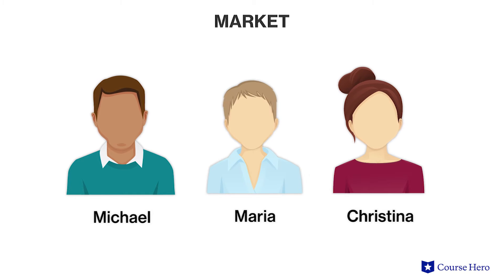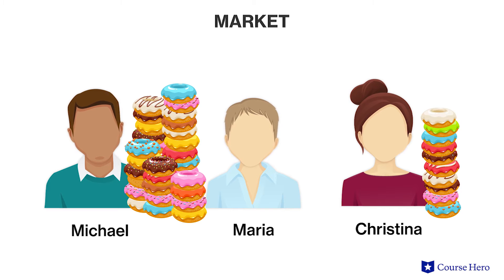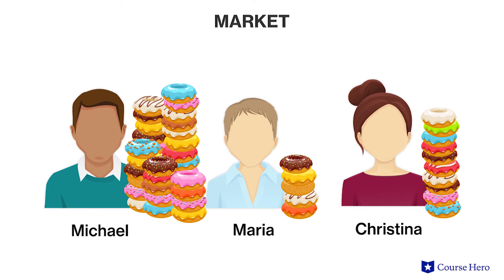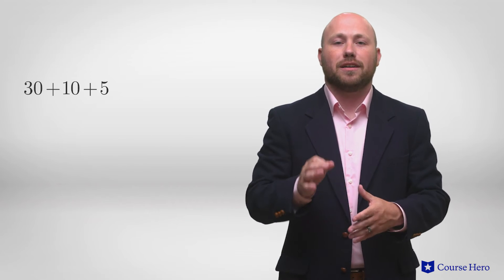Consider a market made up of three potential buyers — Christina, Michael, and Maria — who are all interested in buying donuts. Prices in this market range from $1 to $5. Michael loves donuts and buys three times as many as Christina does at every price point. Maria enjoys donuts but is frugal and will only buy half as many as Christina does at every price point. If Christina buys 10 donuts at $1 per donut, then Michael will buy 30 and Maria will buy five. The number of items demanded by all three persons taken together is the market demand, and at $1 each the quantity demanded is 45 donuts — 30 plus 10 plus 5.